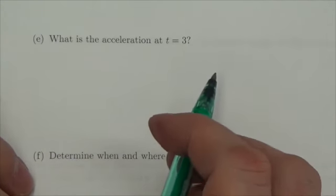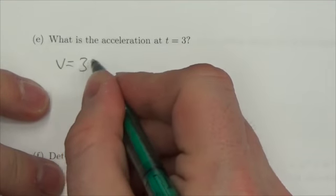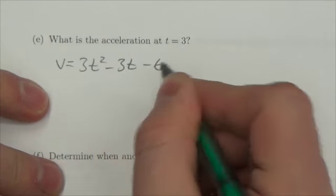Well from question b, we saw that the velocity was equal to 3t squared minus 3t minus 6.